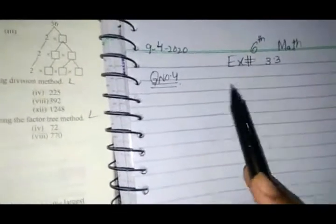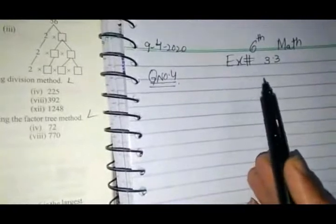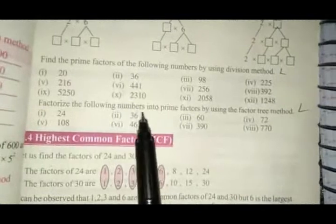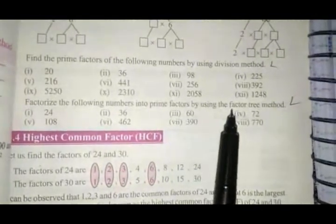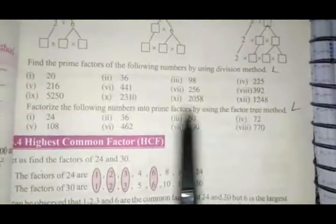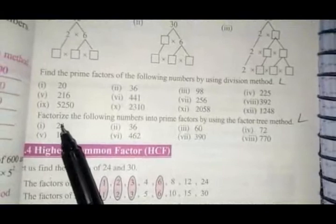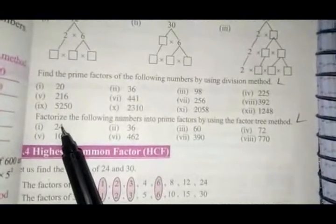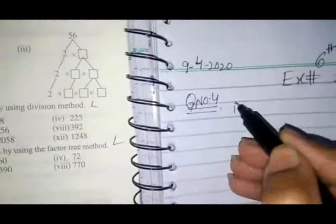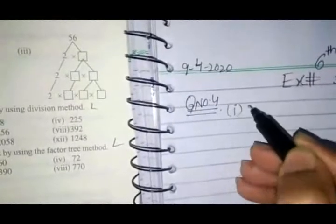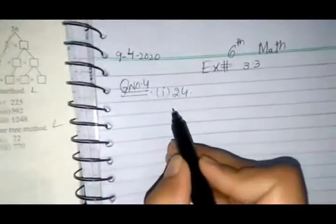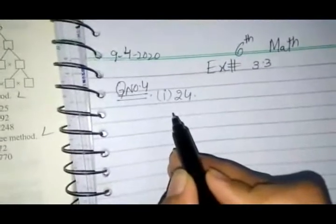Assalamualaikum. Class 6, today we are doing exercise number 3.3, question number 4. Question number 4 is: factorize the following numbers into prime factors by using the factor tree method. Numbers come in — factorize using the factor tree method. Our first question is 24.